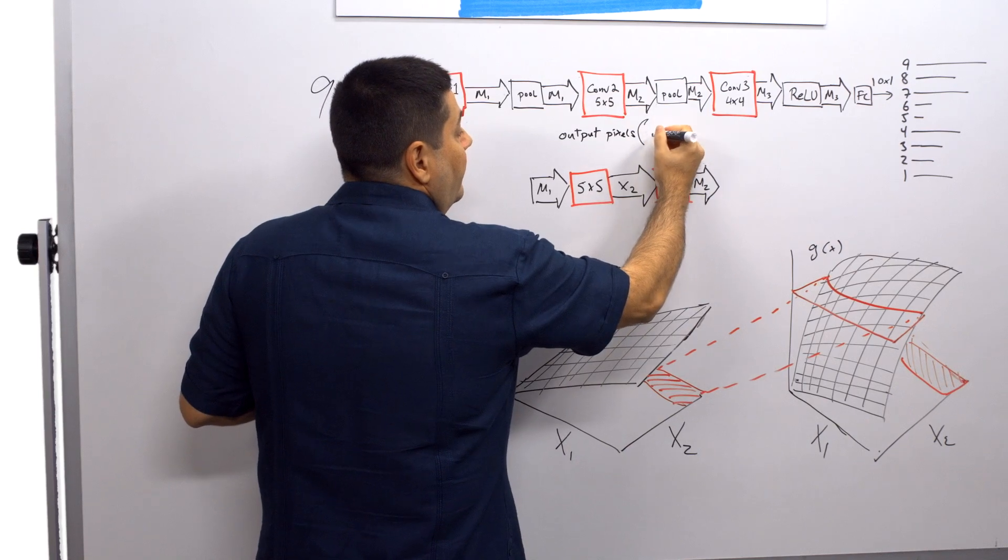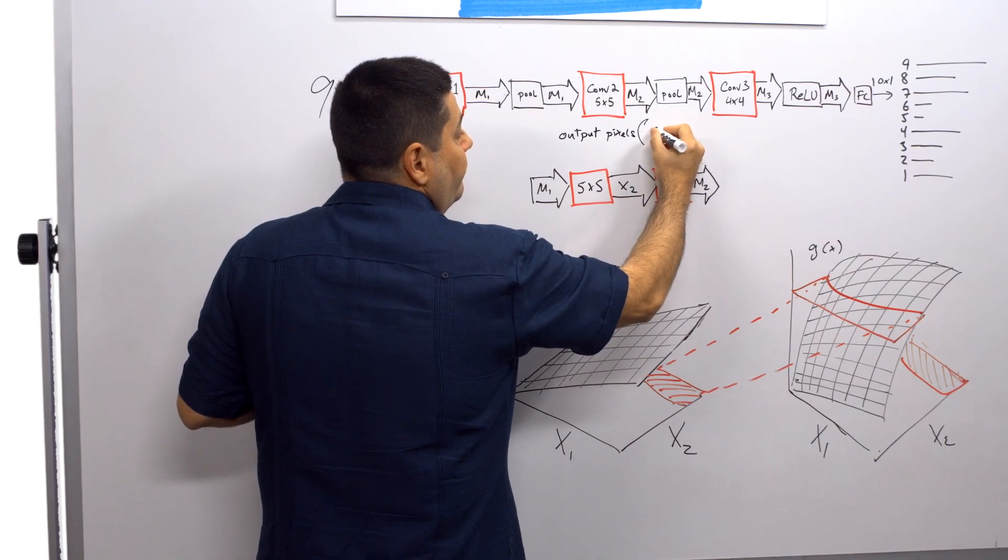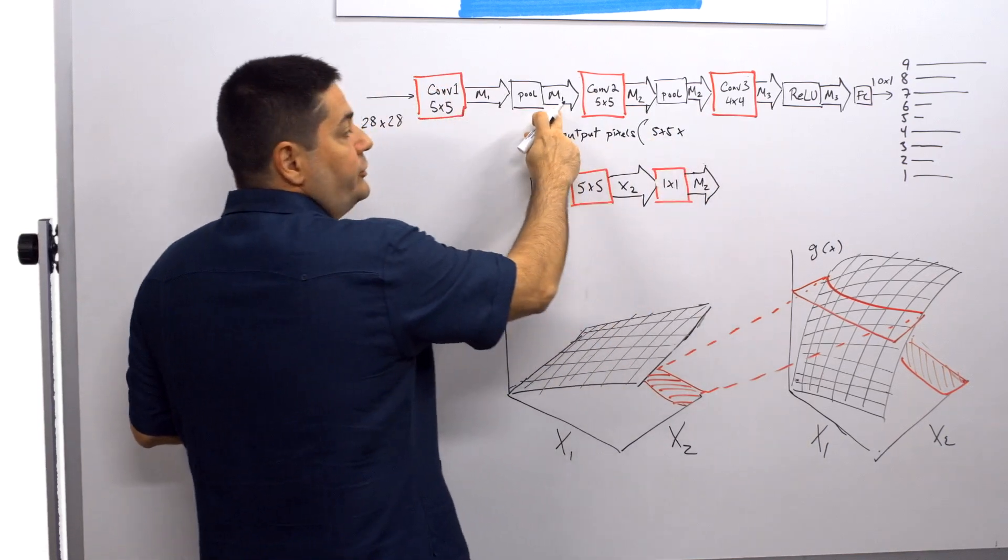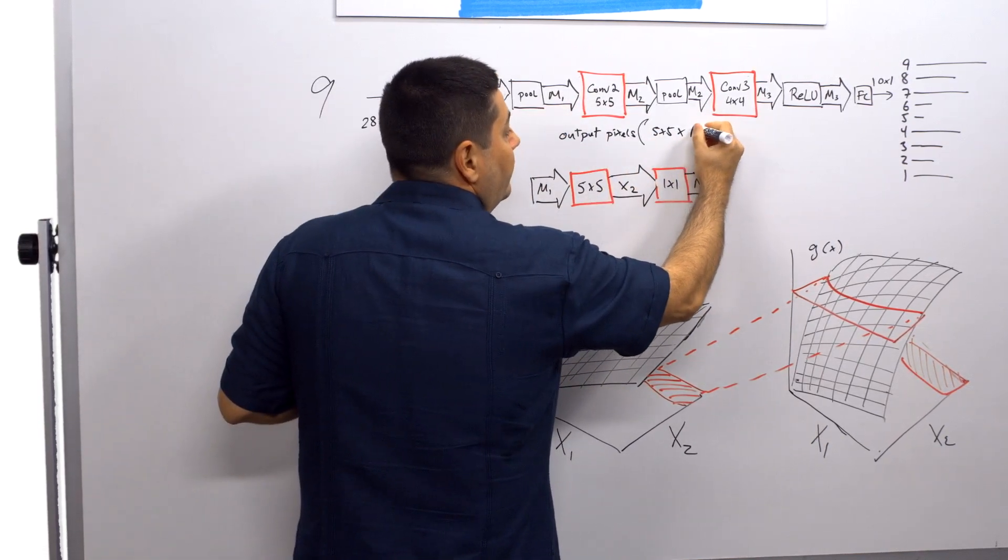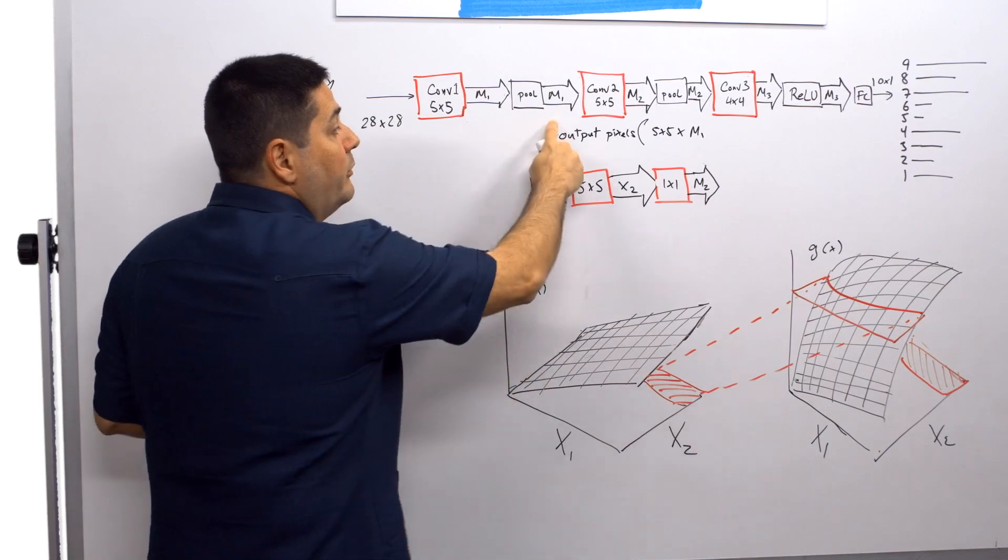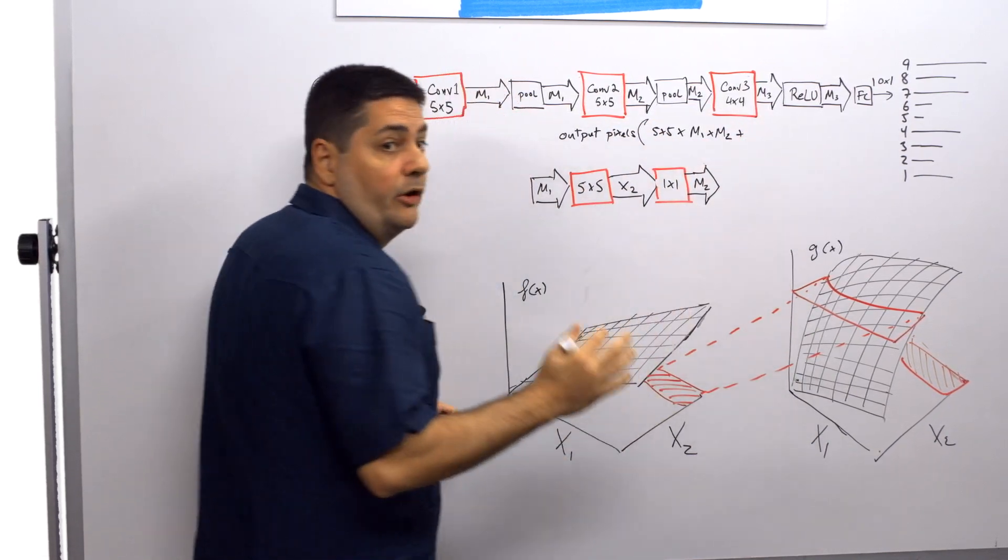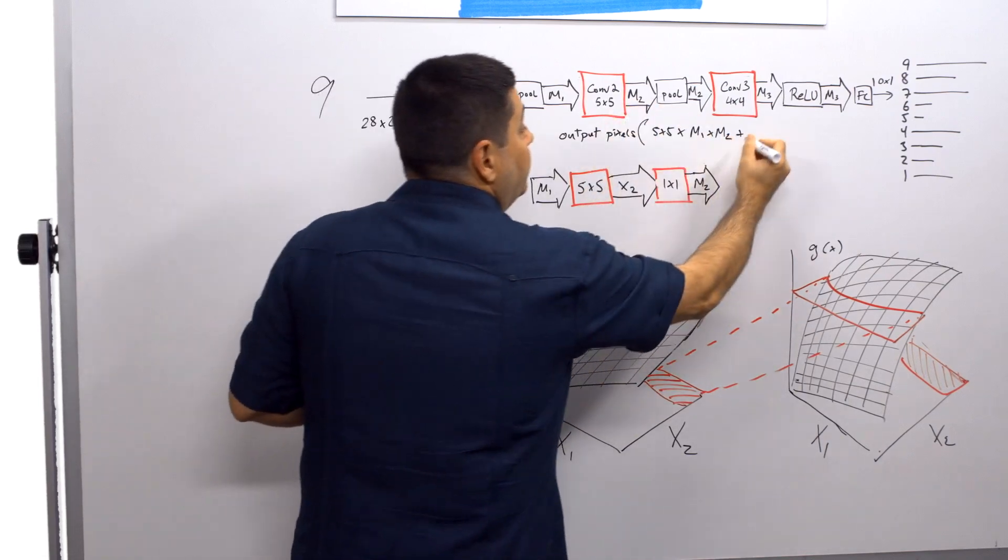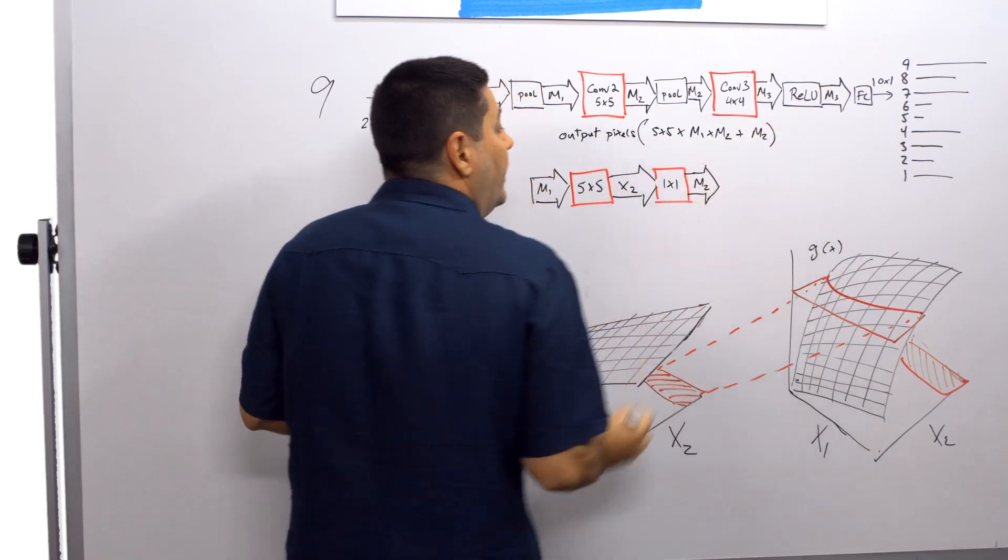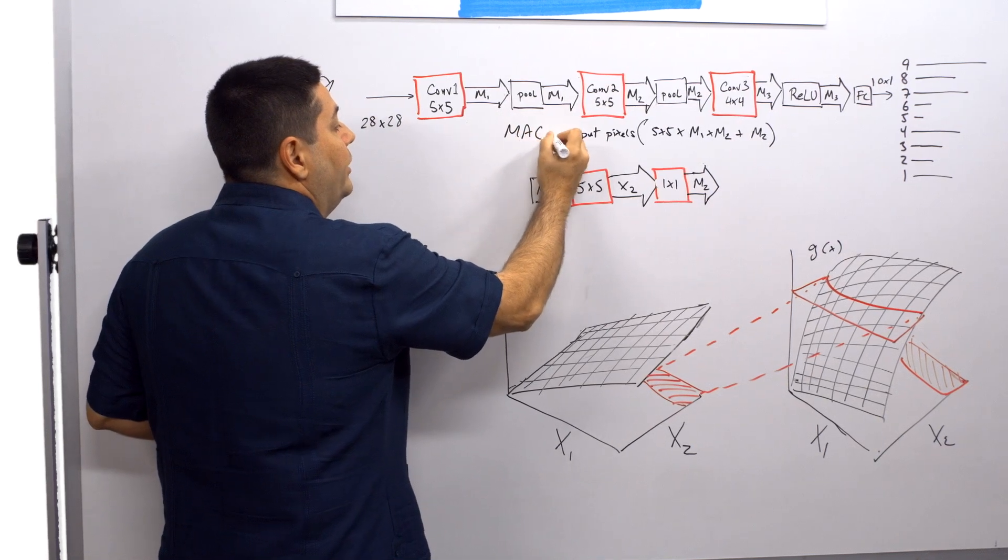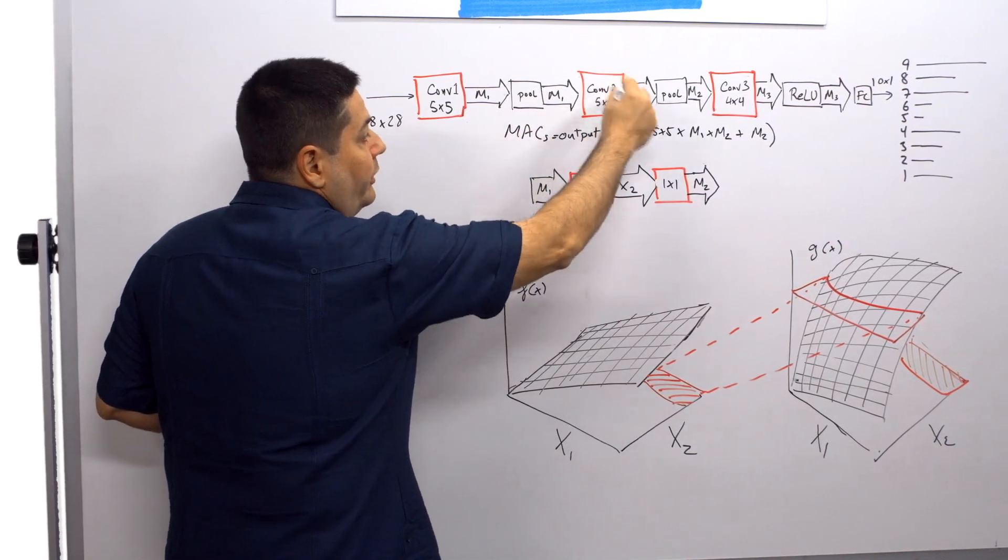...the dimension. So 5 by 5 by the number of input channels, for this case M1, times the number of output channels M2, plus the work for the bias term, which is just M2. So that is the total number of multiply accumulates for this little block.